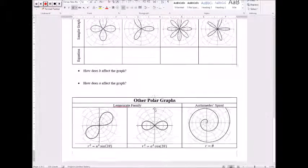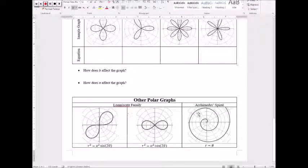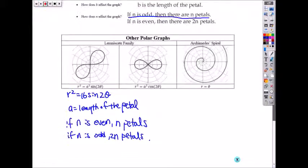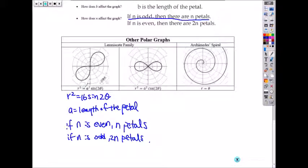The other groups are lemniscates and Archimedes spiral. Lemniscates kind of look like roses. If it's diagonal, it's sine, and it's opposite of the roses. Lemniscate, if it's diagonal, it is sine.